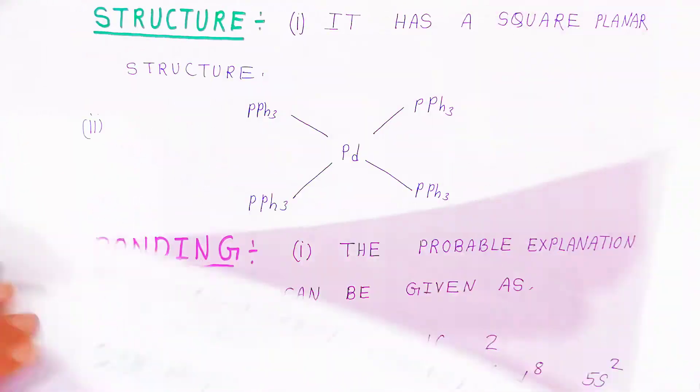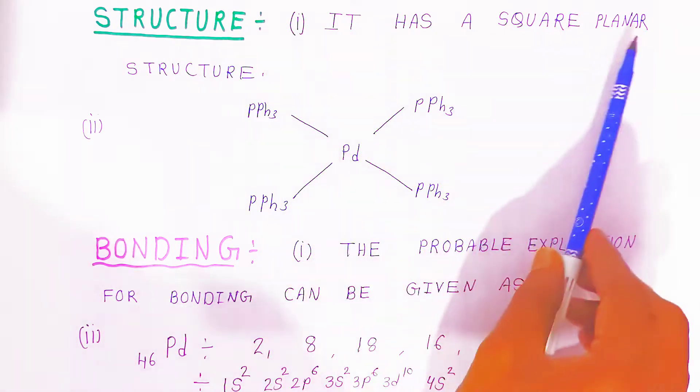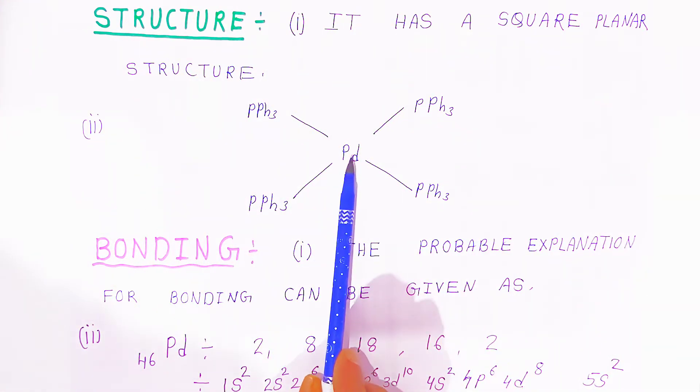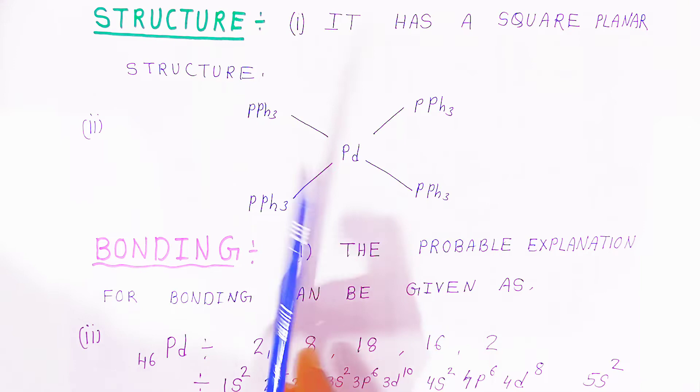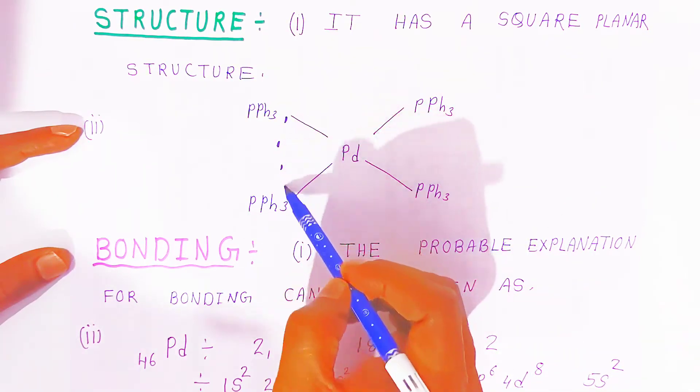When you write down the structure, it has a square planar structure. Palladium will be at the center and triphenylphosphine will be at the corners, so it is a square planar structure.